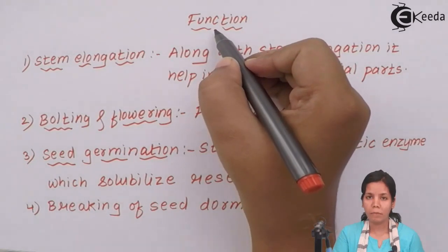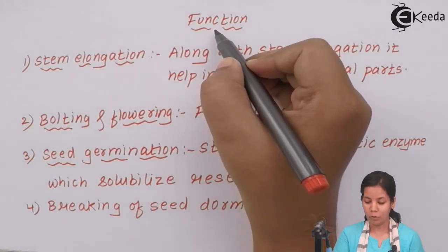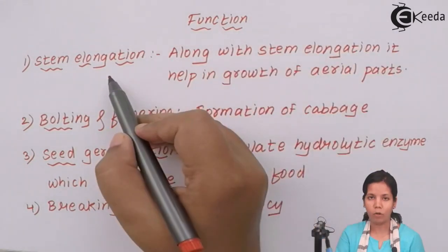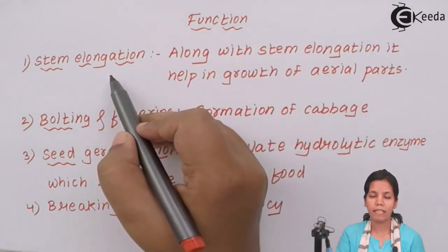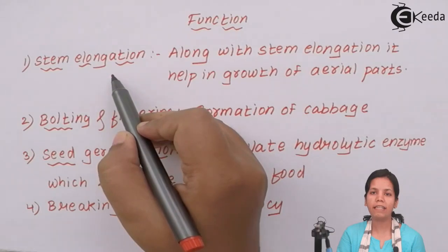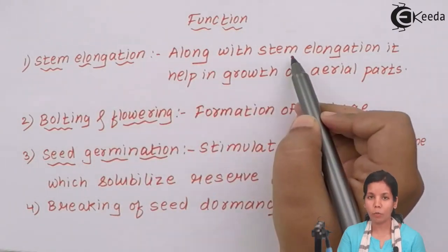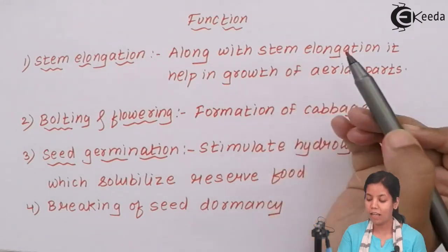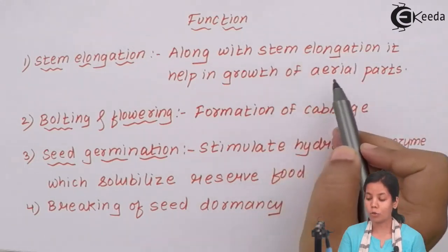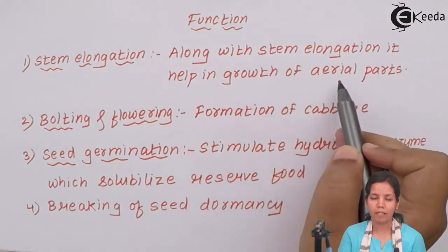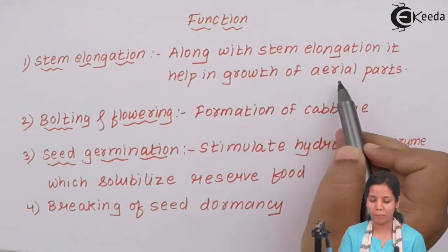The functions of gibberellic acid include stem elongation, that is thickening or increase in the diameter of the stem. Along with stem elongation, gibberellic acid helps in the growth of aerial parts — when I say aerial parts, it means leaves, branches, etc.